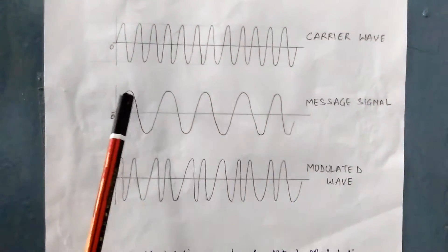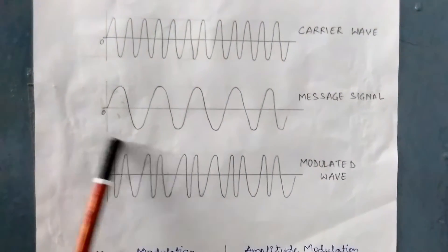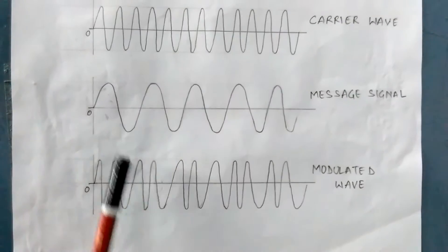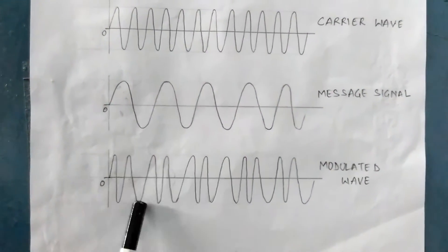Where there is a crest in the message signal, the modulated wave has higher frequency, and where there is a trough in the message signal, the modulated wave has lower frequency.